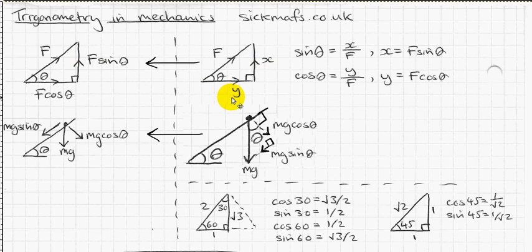In a similar way, to work out Y, we've got Y adjacent to the angle and the hypotenuse, so cos theta. Cos theta equals Y over F. Rearrange gives you F cos theta equals Y. So Y is equal to F cos theta.